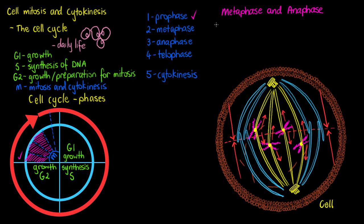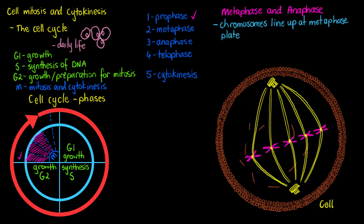We've arrived at the step we refer to as metaphase. The first thing we'll see in metaphase is that our chromosomes have now lined up perfectly at the metaphase plate. The metaphase plate is just an imaginary equator of our cell. If we draw a line down the middle of our cell, that will be what we refer to as our metaphase plate — the equator of the cell.